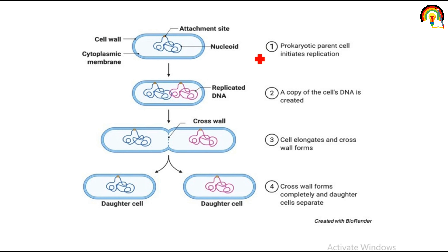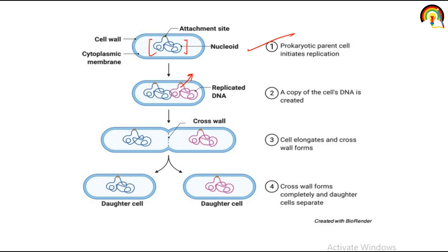The prokaryotic parent cell initiates replication. The prokaryotic DNA initiates the replication process at the origin of replication (ori), and a copy of the cell's DNA is created. The cell elongates, a cross wall forms, and then cytokinesis occurs, resulting in the separation of daughter cells.